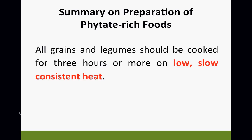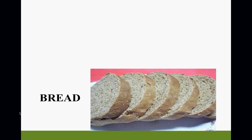Summary on preparation of phytate-rich food: all grains and legumes should be cooked for at least three hours or more on low, slow, consistent heat. When we come back, you'll find that when Sister White talks about putting flour together, she says to add rye to the flour to make the bread. The reason is that rye has a tremendous amount of phytase — the enzyme to neutralize phytic acid. When you combine rye with wheat and oats, rye actually helps neutralize the phytic acid and allows you to get more of the nutrients out of the bread. I hope this information was helpful to you this evening.